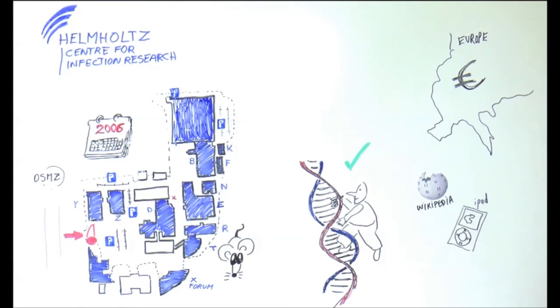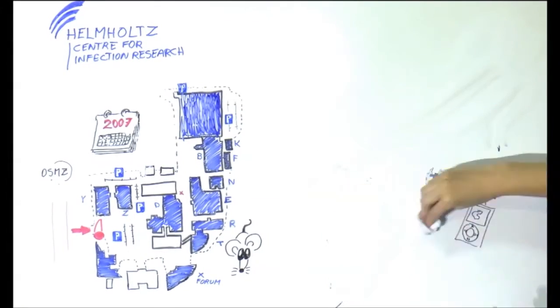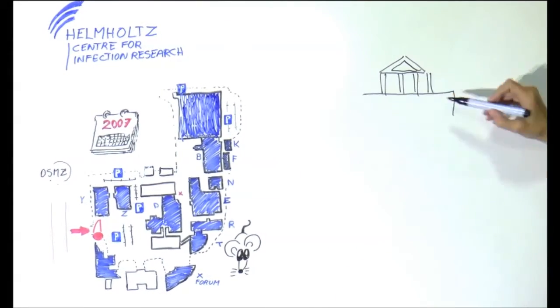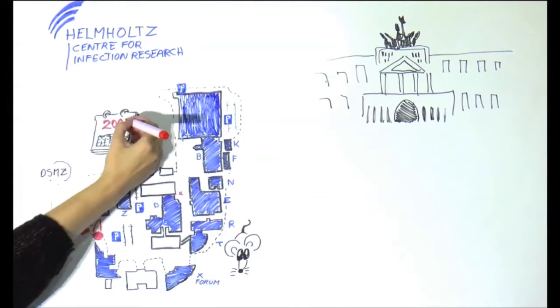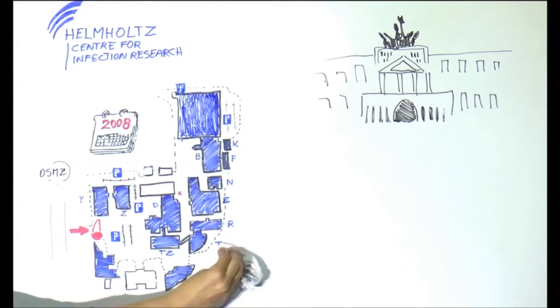In 2007, there is the grand opening of the Schloss Arkaden in Braunschweig, and in 2008, a second animal facility was built, being one of the most advanced in Europe.